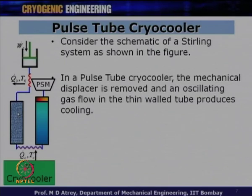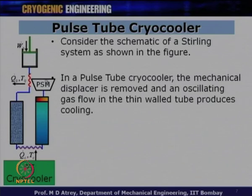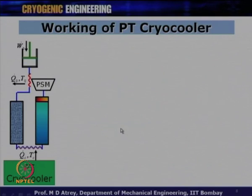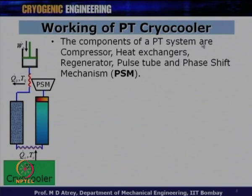In effect, we have a regenerative cryocooler where oscillating pulses enter a tube subjected to pressurization and depressurization, generating cold. This gas tube is called the pulse tube and this phenomenon is called pulse tube action. The components of a pulse tube system are: compressor, heat exchanger, regenerator, pulse tube, and phase shift mechanism (PSM).